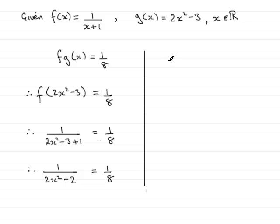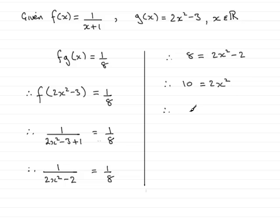Now what we're going to do is multiply both sides by 2x squared minus 2 and 8. So that gives us: 8 equals 2x squared minus 2. If I add 2 to both sides, we have 10 equals 2x squared. Then divide both sides by 2 gives me x squared is 5. So if I take the square root of both sides, we end up with x equals plus or minus the square root of 5.